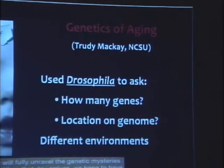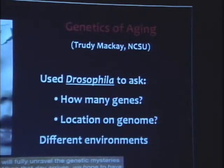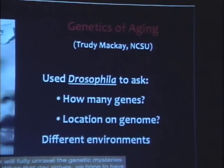In order to do these experiments, they couldn't really use humans, so they used Drosophila — fruit flies. They wanted to ask how many genes are involved in aging, where these genes are located on the genome, and to what extent longevity is determined by genes. But there was a twist: they asked these same questions in a number of different environments — control conditions, cold environments, and hot environments.